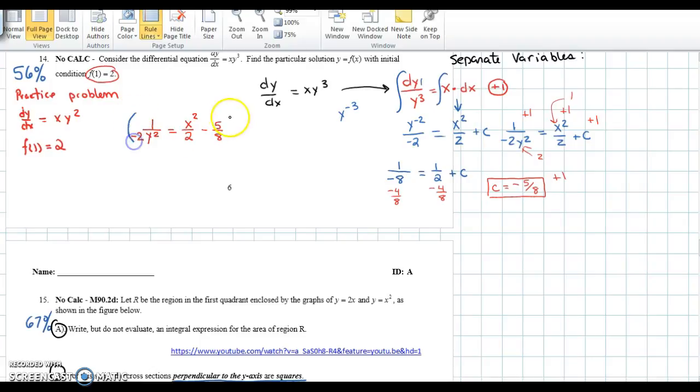I've plugged in everything in my initial condition, and now I will multiply both sides by negative 2. Getting 1 over y squared equals negative x squared plus 5 over 4. Now I can't just flip these over until I have a common denominator on the other side. So this would be the same as negative 4x squared plus 5 all over 4 equals 1 over y squared.